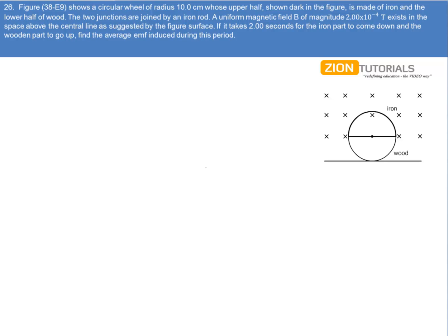The uniform magnetic field B is given by 2 into 10 to the power minus 4 tesla, and it is taking 2 seconds for the iron part to come down and the wooden part to go up.